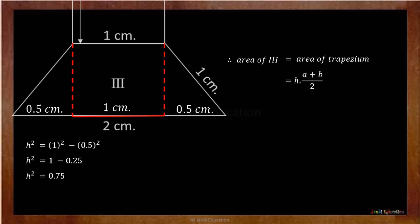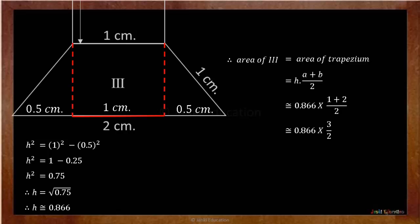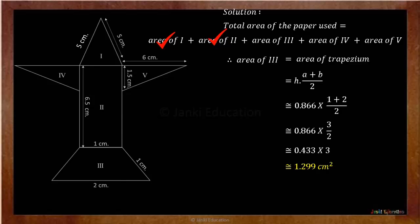So height: AC² = AB² + BC², therefore AB² = AC² minus BC². Calculating further, it gives us the value — height is equal to square root of 0.75. Which is again by the long division method, it gives us an approximate value of 0.866 centimetre. Therefore, by using this value into the formula of area of trapezium, it gives us an approximate value of 1.299 centimetre square. And hence we have found the area of the third figure.